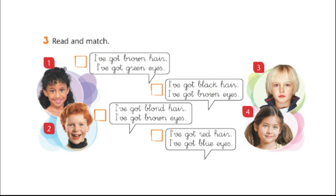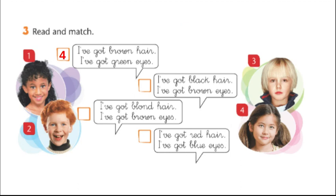The girl in picture number one does not have brown hair, so it can't be her. The boy in number two also doesn't have brown hair, so I know it can't be him. Number three — nope, he doesn't have brown hair. Number four, the girl has brown hair. So now I need to check what color her eyes are, and they're green, so she's a match. I write number four in the box next to: I've got brown hair. I've got green eyes.